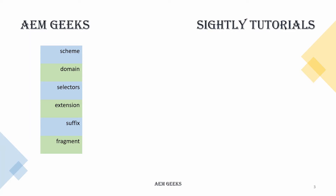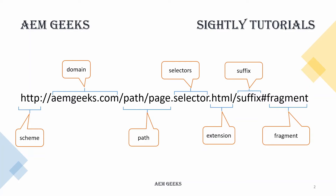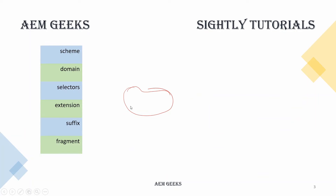I'll cover scheme, domain, selectors, extension, suffix, and fragment each in detail with a demo. For selectors, there are two options: you can add selectors or remove selectors. For suffix, you can prepend or append a suffix. You can also prepend or append a path, but I've already covered path manipulation in another tutorial so I won't discuss it here.